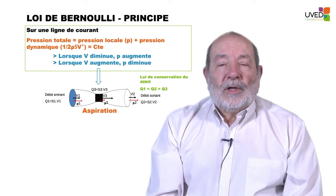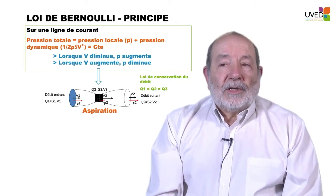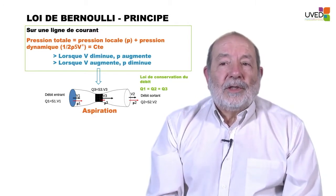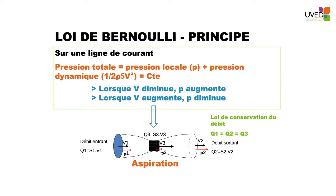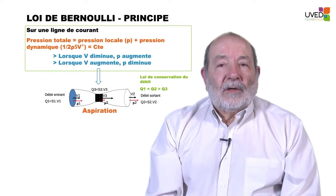Before I explain the airfoil notion, I would like to spend a few seconds on Bernoulli's law. In a watering hose, the flow conservation principle says that the flow is the same along the tube. If the cross-section is the same at input and output, the same quantity of water will come out. But if we pinch the tube, we reduce the cross-section and increase the speed. Bernoulli's law states that in a current line, total pressure is constant. Total pressure is the sum of local pressure p and dynamic pressure: half of rho times v squared.